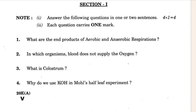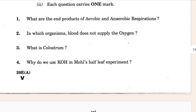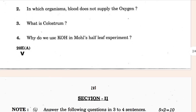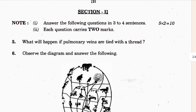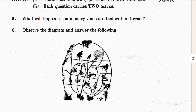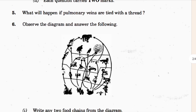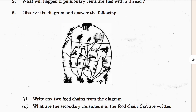What are the end products of aerobic and anaerobic respiration? In which organisms does blood not supply the oxygen? What is cholesterol? And this is a photon — why do we use KOH in the More Half Leaf experiment? After Section Two, this is the fifth one — what will happen in the plumber events?